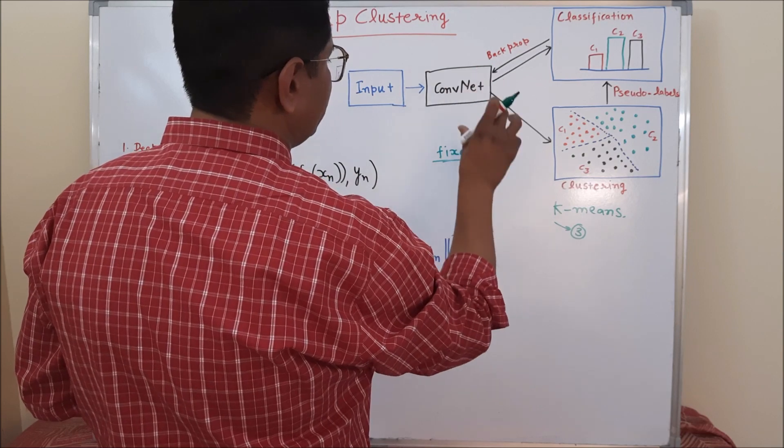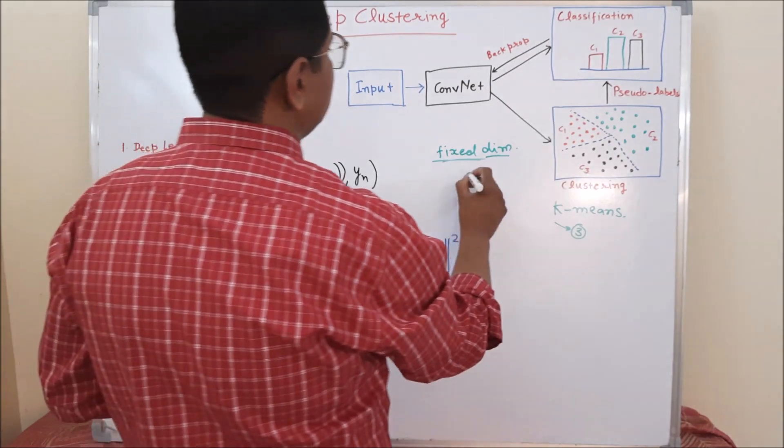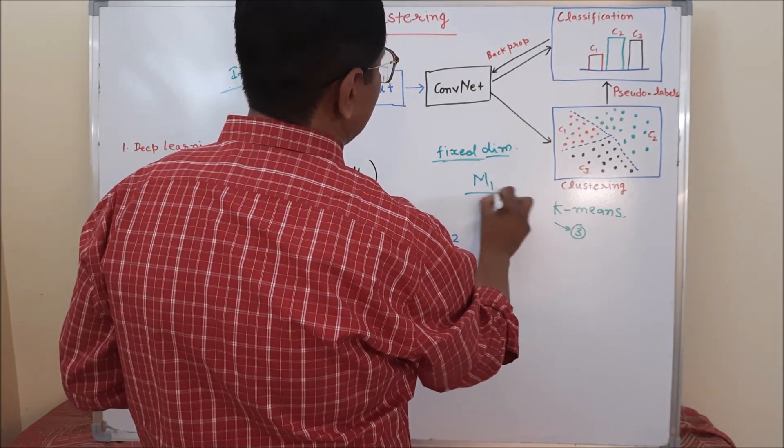we get some convergence criteria. After convergence criteria, we can save our model like M1.